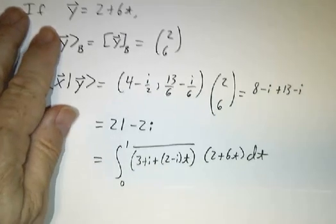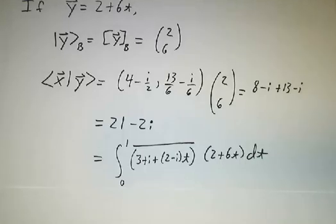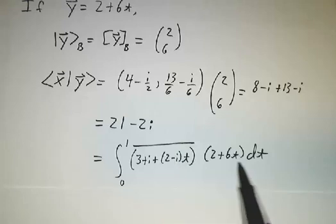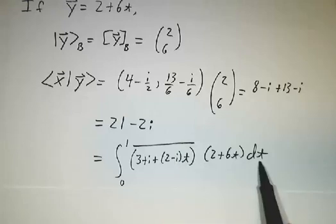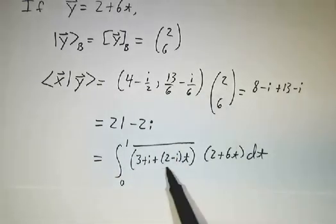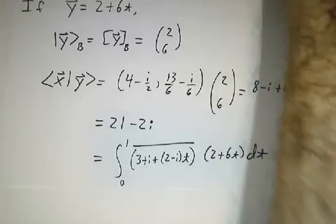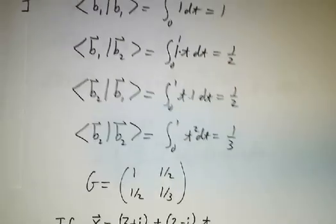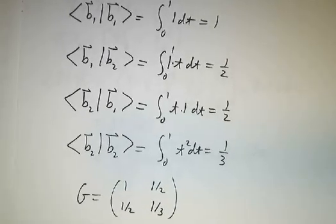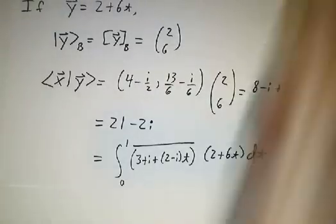That's exactly what we would have gotten if we took the inner product from the definition: we took x, conjugate it, multiply by y, and integrate it. So by multiplying rows times columns, you don't have to do the integrals. You already did the integrals to figure out the metric matrix. Once you figure out the metric matrix, you never have to do any more integrals. Everything is just matrix multiplication.